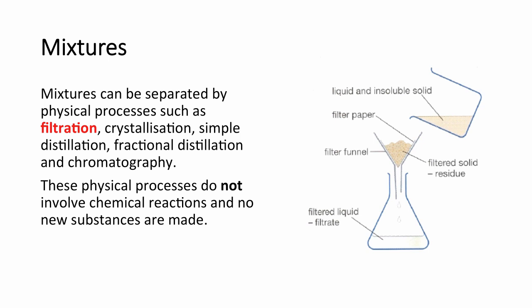Mixtures can be separated using physical processes because they have not been joined together by chemical means. The first process is filtration, which separates a soluble substance in a solution from an insoluble substance. These can be separated by decanting the mixture into a filter funnel and filter paper, where the insoluble solid is separated and remains inside the filter paper as a residue, whereas the solution is able to pass through the filter paper and is collected at the bottom as a filtrate.